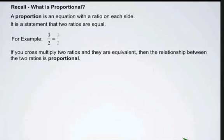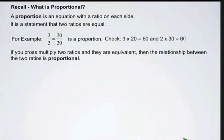For example, if we had 3 over 2 equal to 30 over 20, and we were trying to determine if this was a proportional relationship, we would say that it would be, because if we cross-multiply 3 times the 20, which is 60, and cross-multiply 2 times the 30, which is also 60, you can see that those two values are equal, therefore it is a proportion.